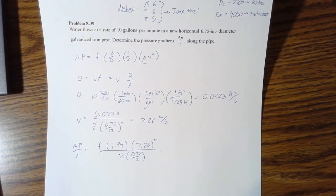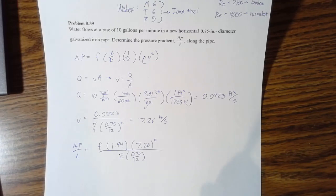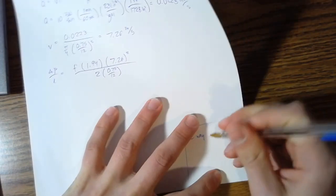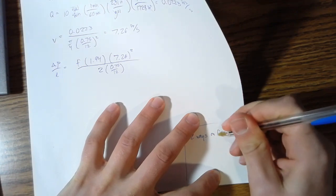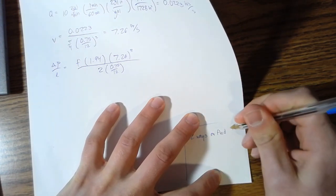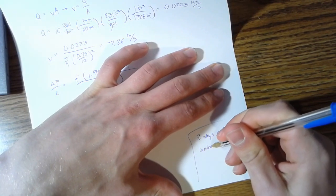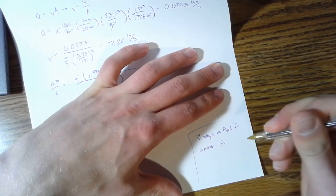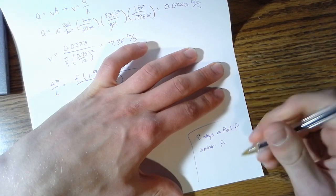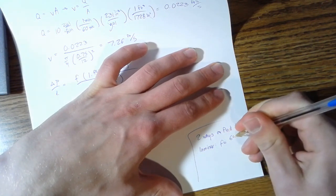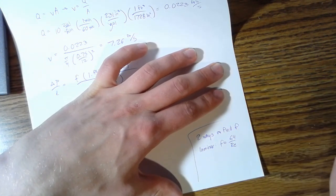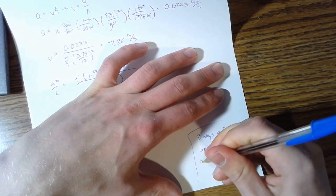So the last thing that we need is this f here, and there are two ways to find f. To find f for laminar: laminar is easy because that's just f equals 64 over your Reynolds number, which is nice.